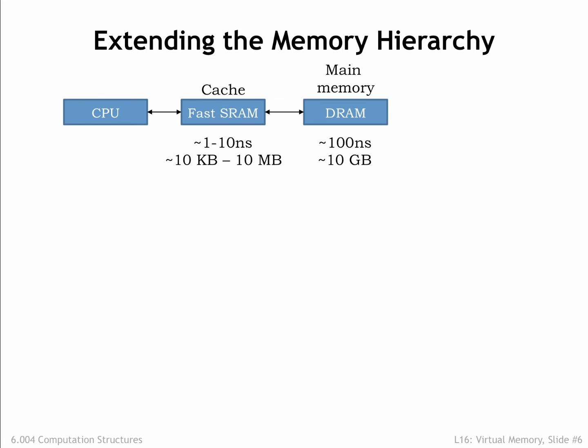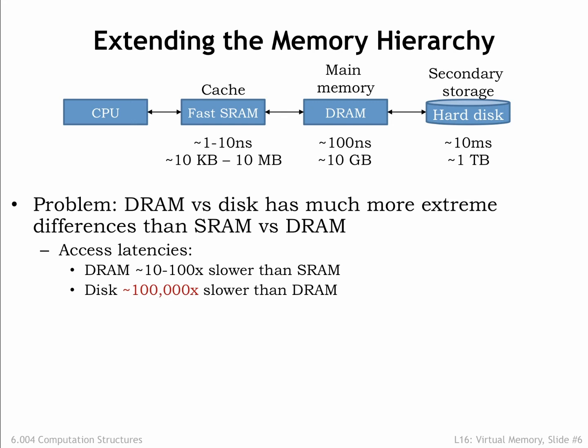Here we see the cache and main memory, the two components of our memory system as developed in Lecture 14. And here's our new secondary storage layer. The capacity of secondary storage is huge — even the most modest modern computer system will have hundreds of gigabytes of secondary storage, and having a terabyte or two is not uncommon on medium-sized desktop computers. Secondary storage for the cloud can grow to many petabytes — a petabyte is 10 to the 15th bytes, or a million gigabytes. However, disk access times are 100,000 times longer than those of DRAM, so the change in access time from DRAM to disk is much, much larger than the change from caches to DRAM.